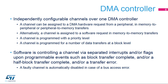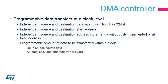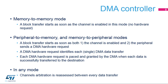The software can control a channel via the separated interrupts and/or flags upon programmable events, such as a block transfer complete and/or a half-block transfer complete and/or a transfer error. A channel is programmed for a number of data transfers at a block level with independent source and destination data size, independent source and destination start address, independent source and destination address increment, either contiguously incremented or at a fixed address, and a programmable amount of data to be transferred within a block. In memory-to-memory mode, a block transfer starts as soon as the channel is enabled — there is no hardware request. Whereas in peripheral-to-memory and memory-to-peripheral modes, a block transfer starts as soon as both the channel is enabled and the peripheral sends a DMA hardware request.